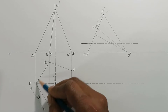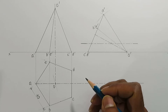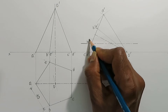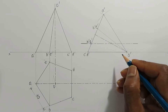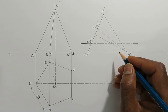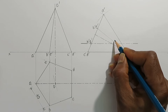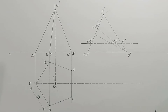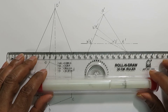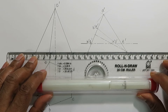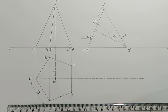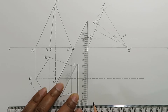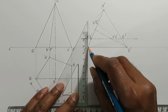Now we can mark the points where the cutting plane is intersecting the edges of the pyramid. P prime and Q prime are the points where the cutting plane intersects the base sides CB and DE respectively. R prime and S prime are the points where the cutting plane intersects the slant edges O prime B and O prime E. At T prime, the cutting plane intersects the slant edge O prime A.